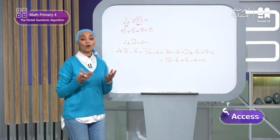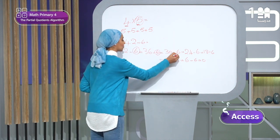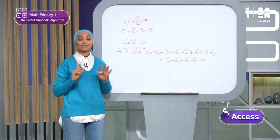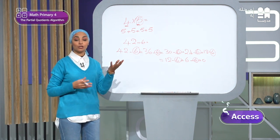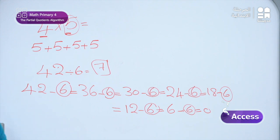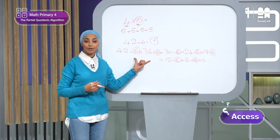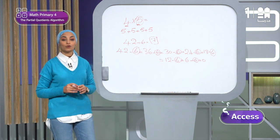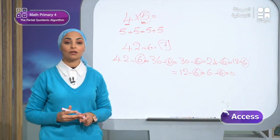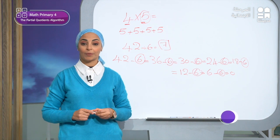How many times did we repeat the subtraction? We subtracted 6 seven times. So 42 divided by 6 equals 7. This example shows that division is repeated subtraction, and subtraction will be very important in the division strategy we will work on today. We will start learning this strategy in the activity Partial Quotients Algorithm under Build, page 312.